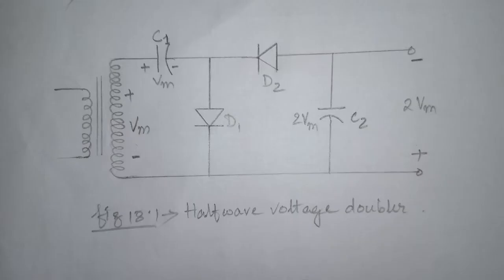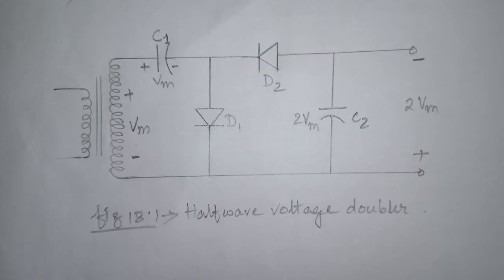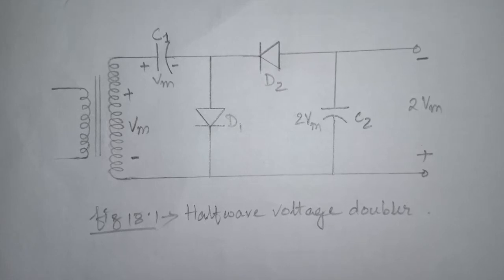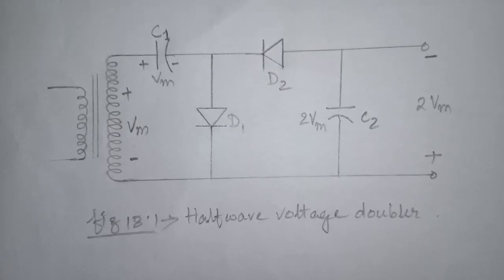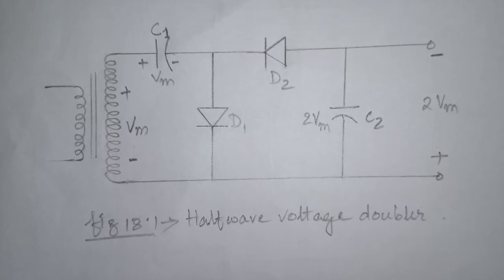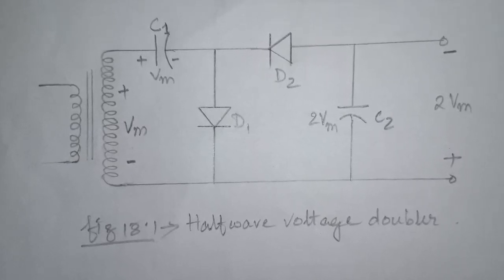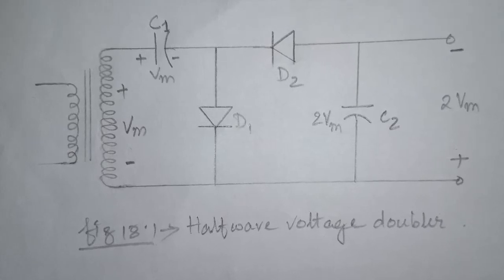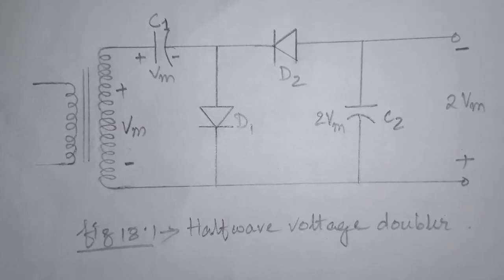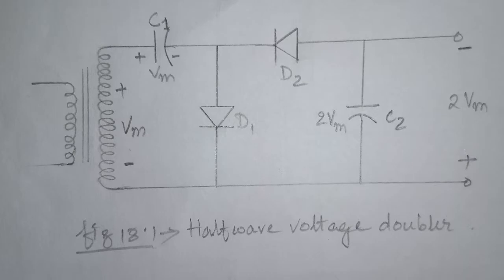Let us start with voltage doubler circuit. A voltage doubler is an electronic circuit which charges capacitors from an input voltage and switches these charges in such a way that, in ideal case, we get exactly twice the voltage at the output as compared to its input. Figure 18.1 shows the half-wave voltage doubler circuit.